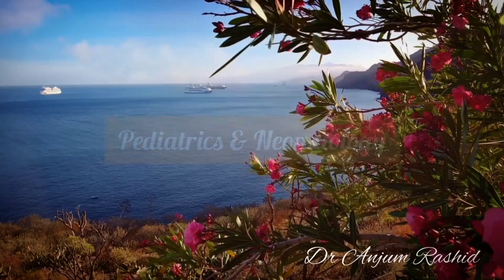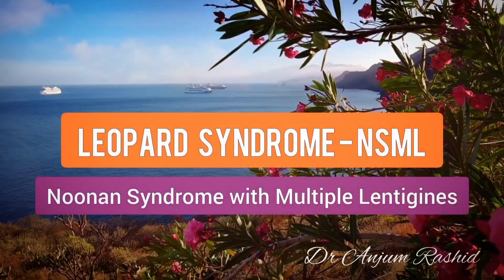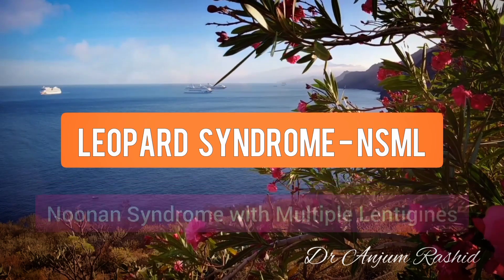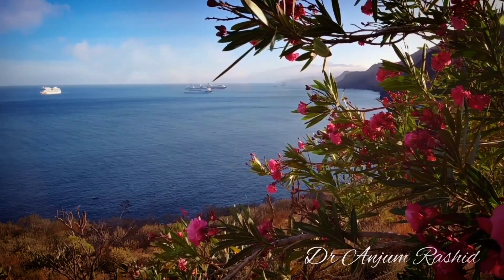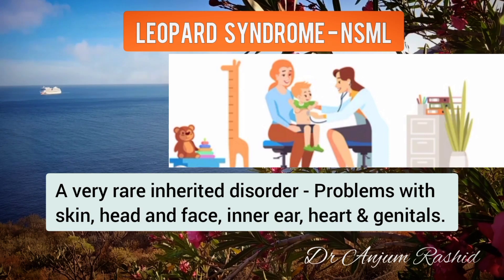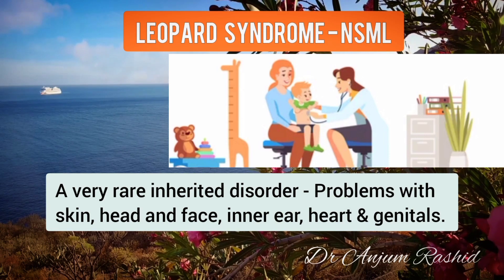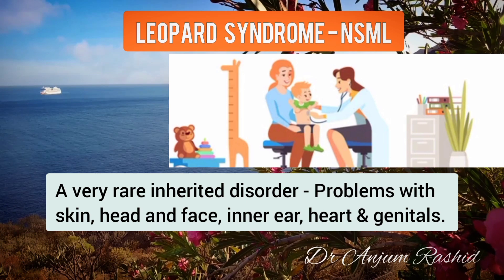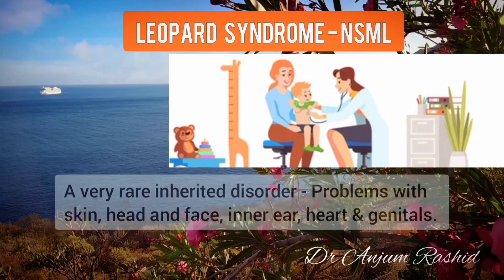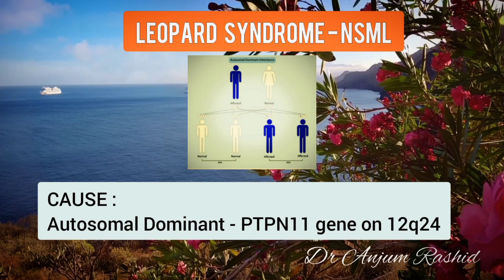Welcome to this video about LEOPARD syndrome, formerly known as Noonan syndrome with multiple lentigines. It is a very rare inherited disorder. People with this condition have problems with the skin, head and face, inner ear, and heart. The genitals may also be affected.